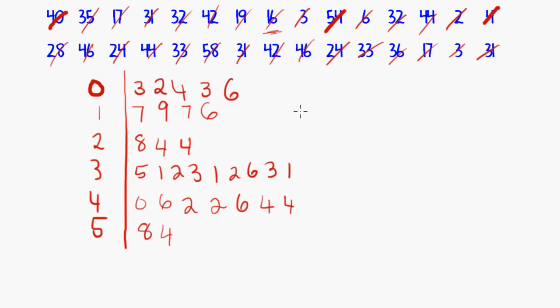And the next step is to put it in order. So these numbers here, three, two, four, three, six, how do they go in order? It's going to be two, three, three, four, six. So two, three, three, four, six. These ones here, seven, nine, seven, six. In order, they are six, seven, seven, nine. Eight, four, four will go four, four, eight.